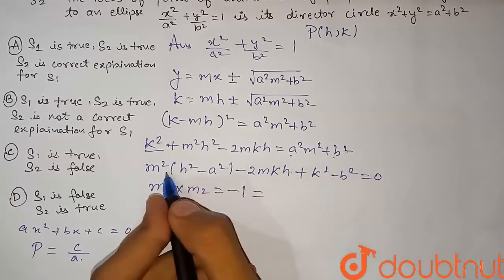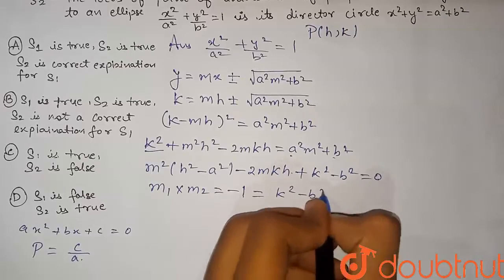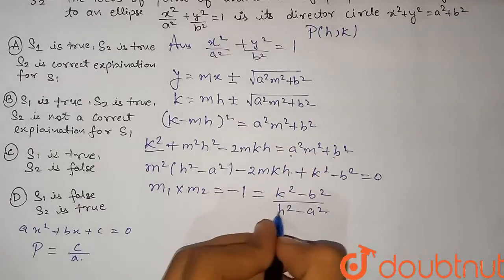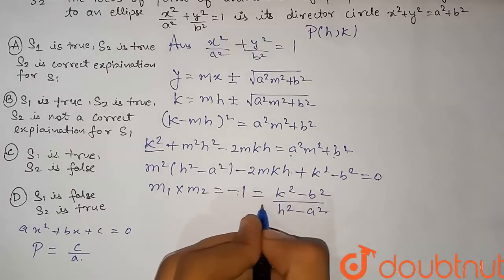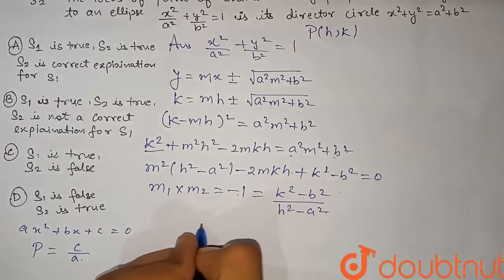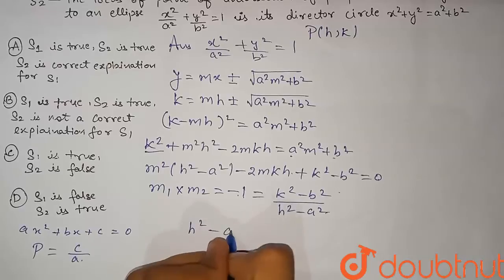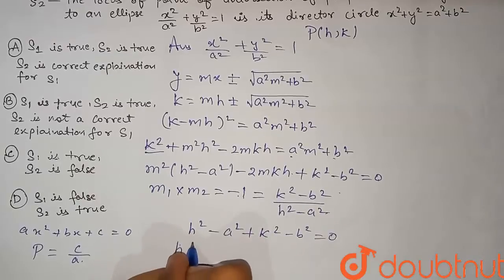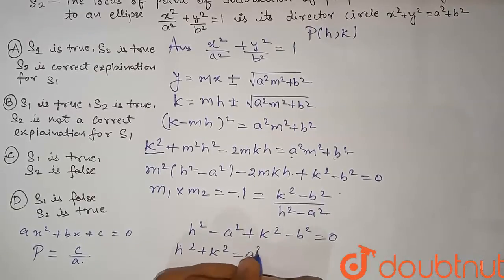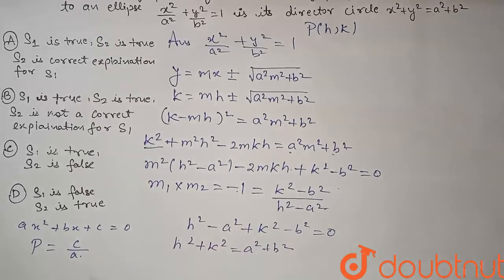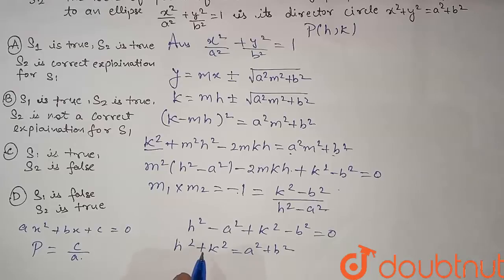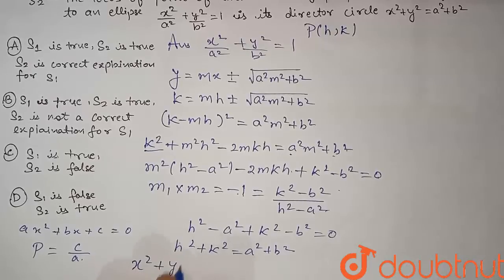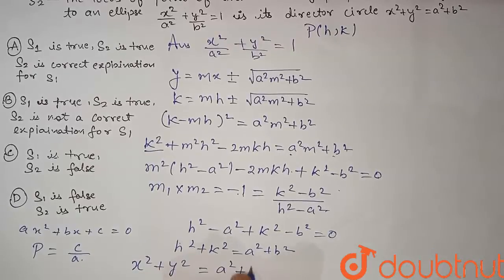We write: m₁ · m₂ = (k² − b²) / (h² − a²) = −1. Simplifying: −1 · (h² − a²) = k² − b², which gives h² − a² + k² − b² = 0, or h² + k² = a² + b². This is the locus of the point of intersection of perpendicular tangents. Replacing h and k with x and y: x² + y² = a² + b².